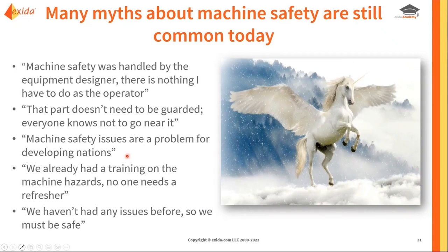Or the belief that machine safety issues are something for developing nations — but we can see in the United States they're really not making the improvements. Things like 'training was done once, you don't need a refresher,' or 'we've not had any issues before, so we must be safe.' One of the things we really want to make sure we cover is that in addition to all of the technical aspects for designing the system, if we don't address the human element and the management aspects — both for policies and procedures and the approach the final asset owner uses — or if we don't address the potential for systematic failures due to human errors when designing safety functions, we really haven't done our job of making the machine safe.